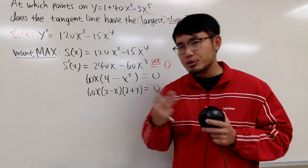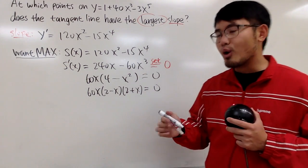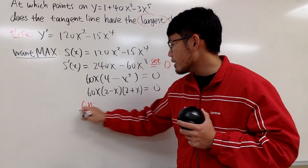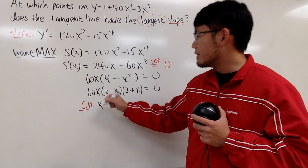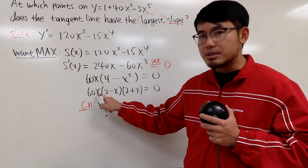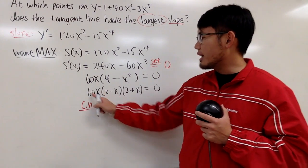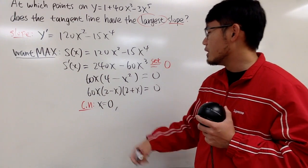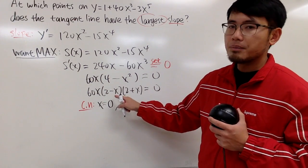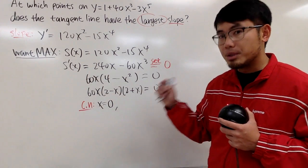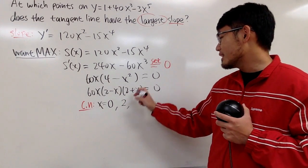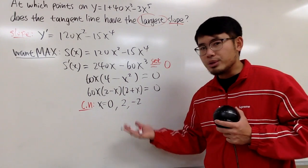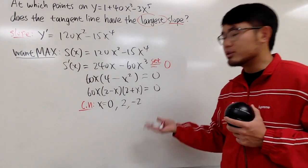From the factored form, we get three critical numbers. First, x = 0 because 60 times 0 makes the whole expression 0. Next, setting (2 - x) = 0 gives x = 2. And setting (2 + x) = 0 gives x = -2. So we have three critical numbers to consider: x = -2, 0, and 2.